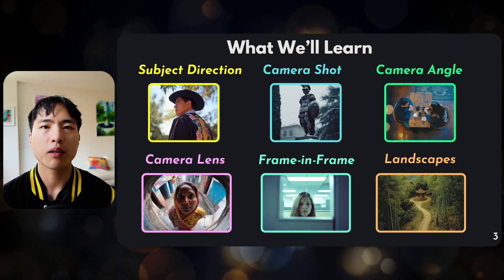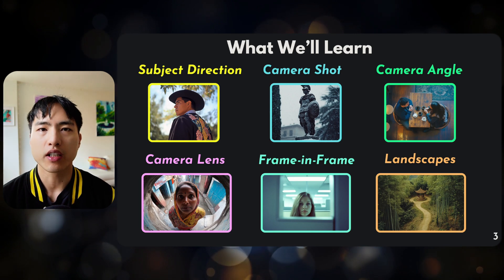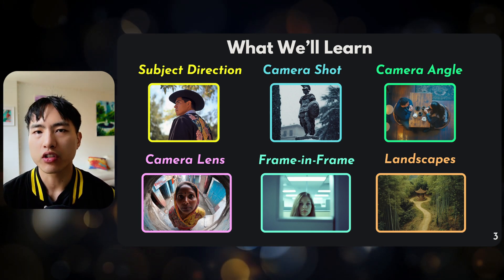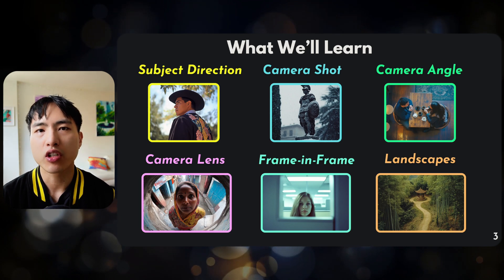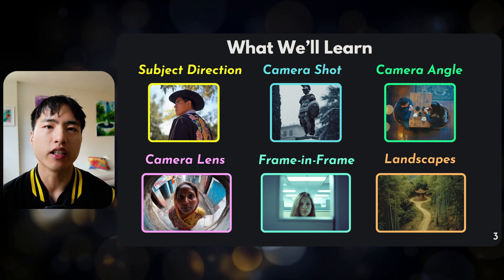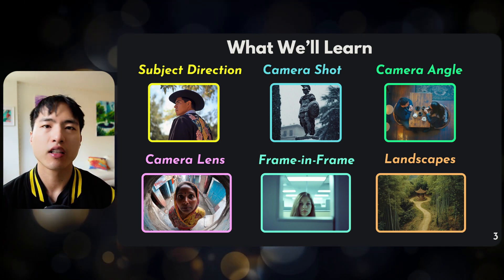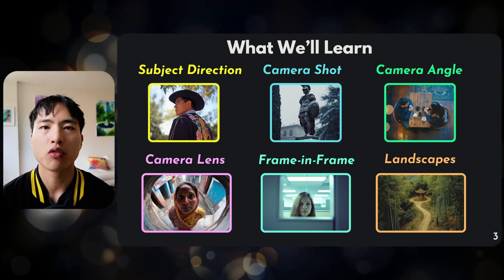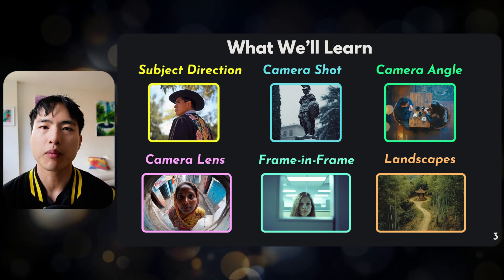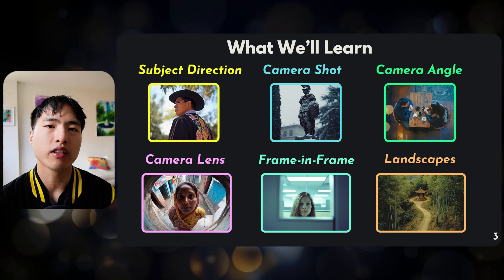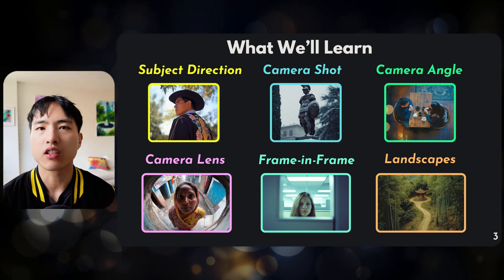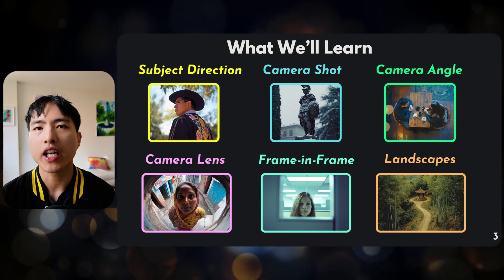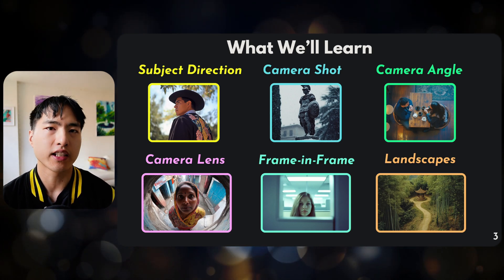We'll learn about six different aspects. Number one is the direction of the subject. Number two is the camera shot and framing that subject in that camera shot. Number three is the camera angle we're seeing the subject from. We'll also cover the camera lens, which is like a filter you can apply to the image, discuss some framing techniques, and then finish off with using different camera angles for landscape photos.